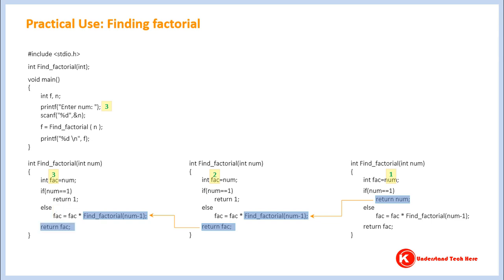Two is multiplied with the value of fact, which is three, and therefore the new value of fact is six. The computer comes to a return statement and goes back to where this function was initially called in main. Along the way, the value six also travels. This value is stored in variable f, and finally f is displayed. You get 6 on the screen, which is the factorial of the number 3 we entered at the beginning. This is how factorial of a number can be found using recursive functions.